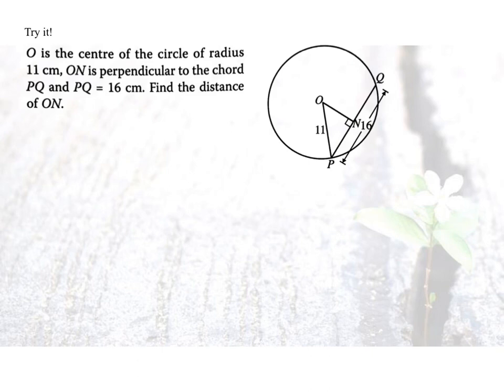Let's try the next question. In this question, O is the center of the circle. The radius is 11cm. And they tell me that ON is perpendicular to the chord. If I have ON perpendicular to chord, what will happen to the chord PQ?